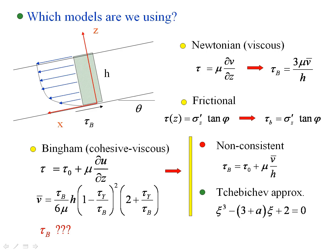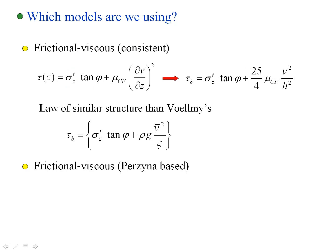For a viscous-frictional material, integrating the constitutive law consistently shows that if the model were non-consistent this term would be 25/4 times smaller, which is not desirable. Interestingly, the structure of this law is the same as the Voellmy model, which has a velocity-squared term and a constant coefficient — proposed around 1938 for snow avalanches and now also used for debris flows. An alternative is to use Perzyna-based models.